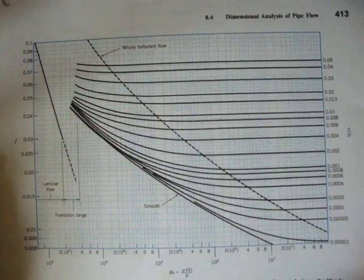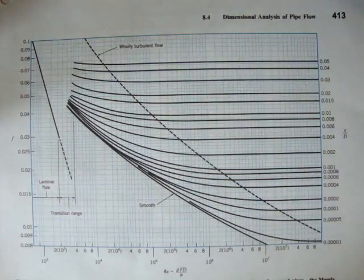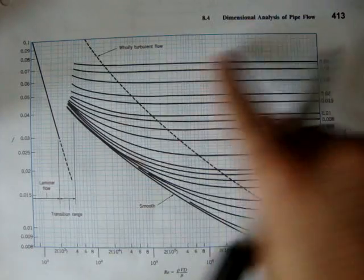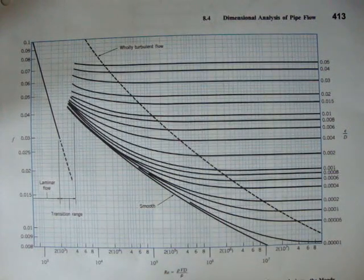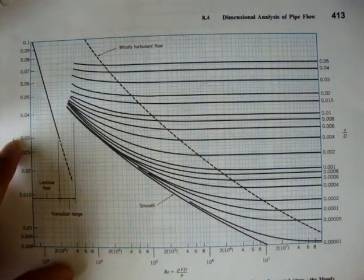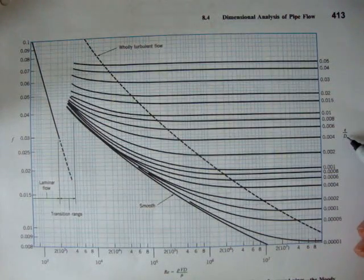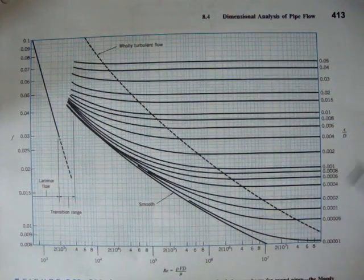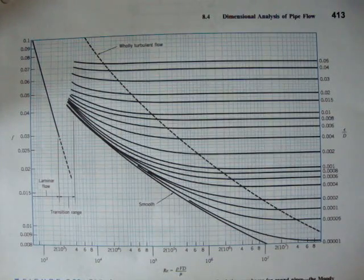Since our Reynolds number was over 2,000, that means the flow in this system was turbulent. And if it was turbulent, we can use the Moody chart. To find the frictional factor, we need to know our epsilon over d, or our relative roughness, and we also need to know our Reynolds number. In this case, we know both.